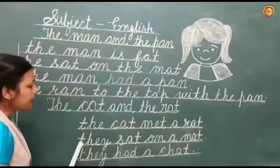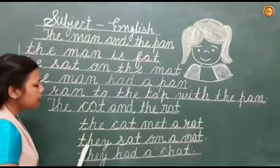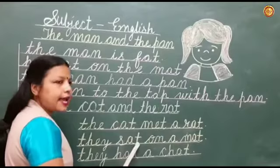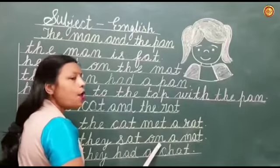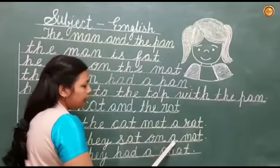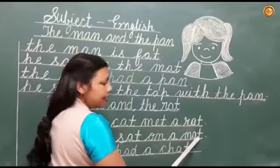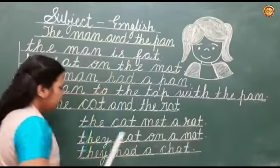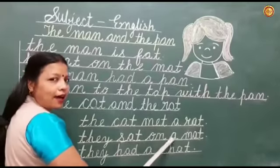Second line: T-H-E-Y, they. T-H-E-Y, they. S-A-T, sat. S-A-T, sat. O-N, on. O-N, on. A, a. M-A-T, mat. M-A-T, mat. Full stop. They sat on a mat.